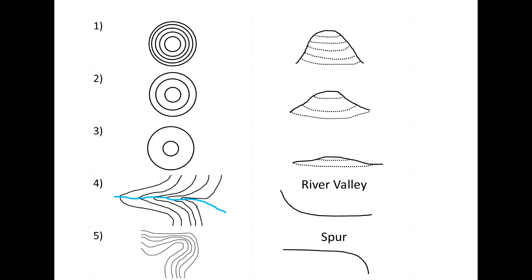So that represents a slightly flatter hill. And then number 3 shows us another example of contour lines that are quite far apart, and this would represent flatter land.